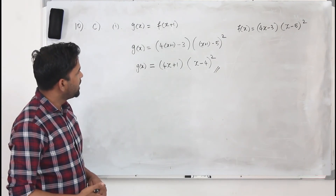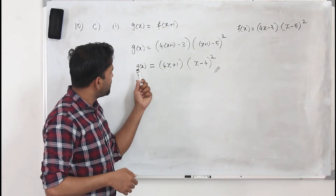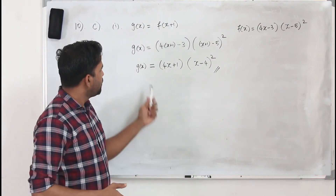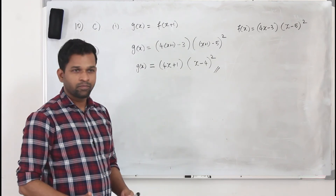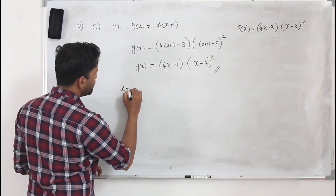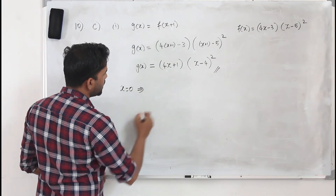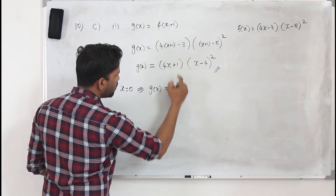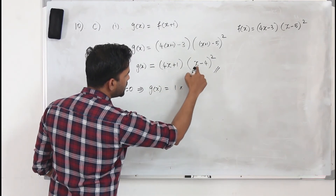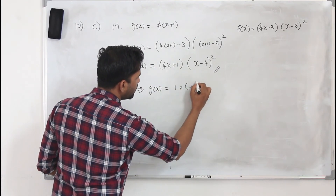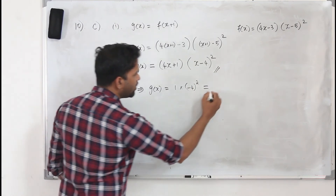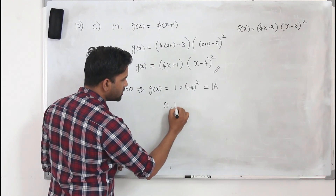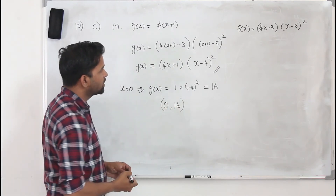The second question in part c says: hence or otherwise, find the y-intercept of C2. To find the y-intercept, substitute x equals zero into g of x. When x is zero: g(0) equals (4 times 0 plus 1)(0 minus 4) squared equals 1 times 16 equals 16. So the y-intercept of C2 is 16, or the point (0, 16).